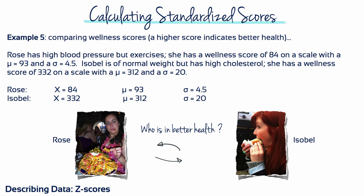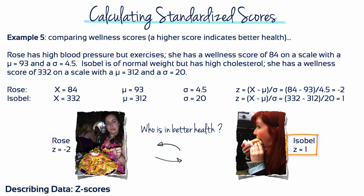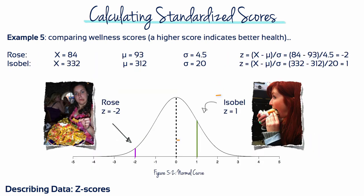Using z-scores to standardize their different wellness variables, who's in better health? Standardizing their data into z-scores gives Rose a z-score of minus 2, while Isabelle has a z-score of plus 1. Isabelle is in better health because her score is above the mean, whereas Rose is below average by two standard deviations.